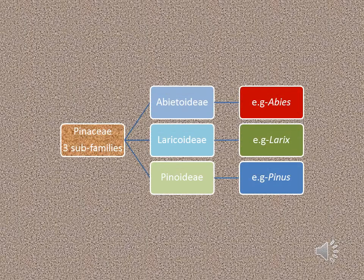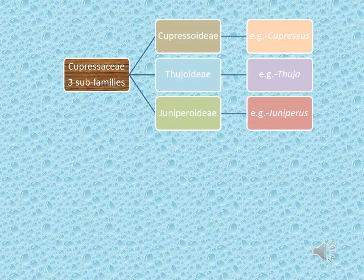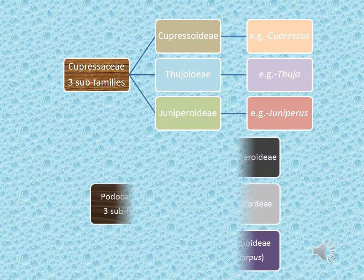Pinaceae family is divided into 3 sub-families: Abietoideae, Laricoideae, and Pinoideae. Abietoideae example is Abies, Laricoideae example is Larix, and Pinoideae example is Pinus. Cupressaceae family is divided into 3 sub-families: Cupressoideae, Thujoideae, and Juniperoideae. Cupressoideae example is Cupressus, Thujoideae example is Thuja, and Juniperoideae example is Juniperus.